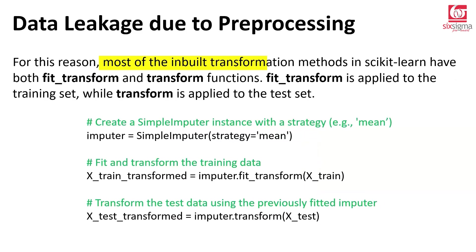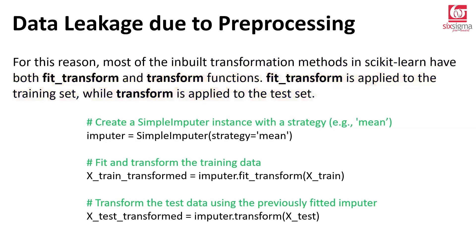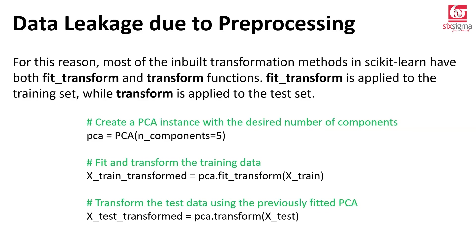For this reason, most built-in transformation methods in scikit-learn have both fit_transform and transform functions. fit_transform is applied to the training set, while transform is applied to the test set. For example, instantiate a SimpleImputer with strategy mean, call imputer.fit_transform(X_train) on training data, and imputer.transform(X_test) on test data. This calculates the mean from training data, fills missing values in training with it, and applies that same mean to fill missing values in test. Similarly, for PCA to eliminate multicollinearity, do fit_transform on train to learn correlation patterns, and just transform on test.